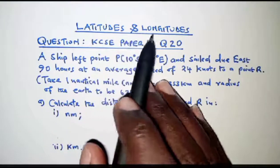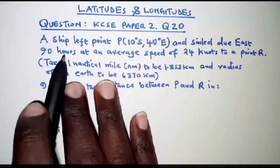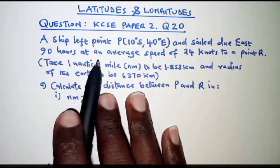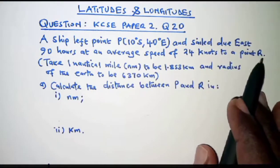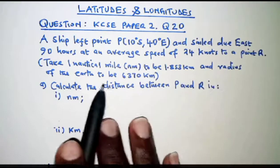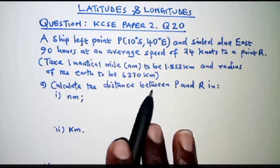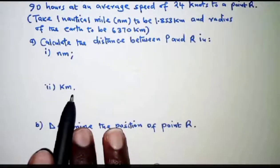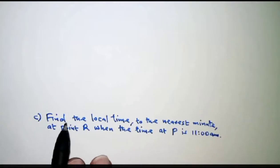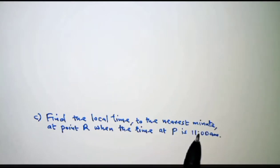The question today is on latitudes and longitudes — KCC paper 2, question number 20. The question reads: a ship left point P at 10 degrees south, 40 degrees east, and sailed due east for 90 hours at an average speed of 24 knots to a point R. Take one nautical mile to be 1.853 kilometers and the radius of the earth to be 6370 kilometers. Part A: calculate the distance between P and R in nautical miles and in kilometers. Part B: determine the position of point R. Part C: find the local time to the nearest minute at point R when the time at P is 11 a.m.